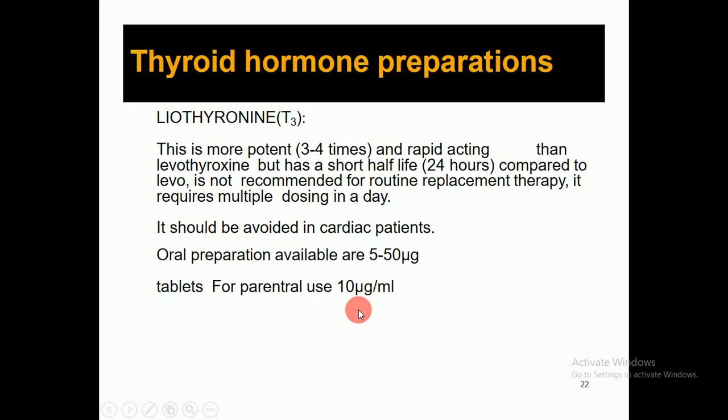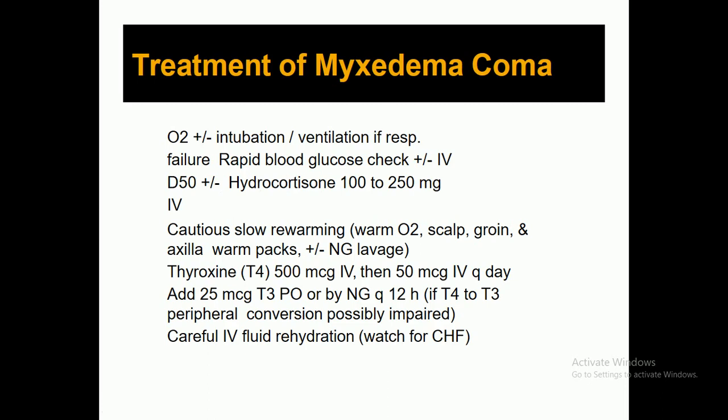For parenteral use, liothyronine is available at 10 micrograms per mL. Regarding treatment of myxedema coma: oxygen supplementation and ventilation should be done if there is respiratory failure. Check blood glucose levels rapidly, and in those conditions IV fluids, D50 dextrose, and hydrocortisone at 100 to 250 milligrams IV can be recommended, along with cautious slow rewarming.